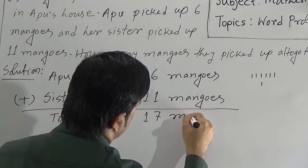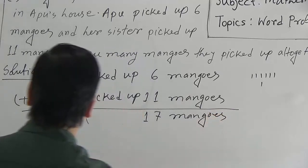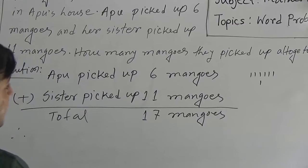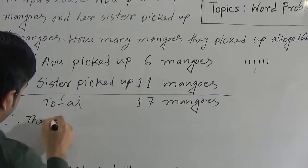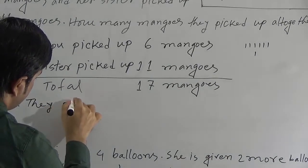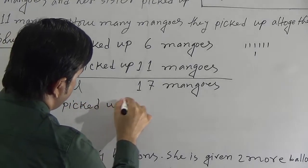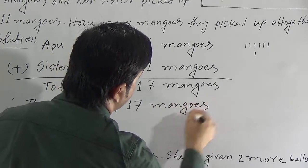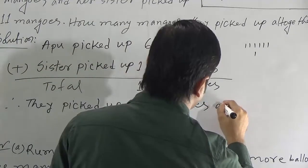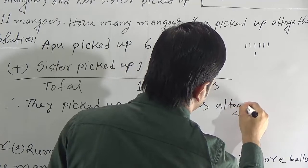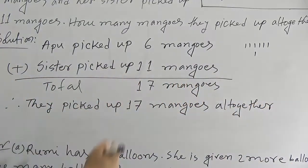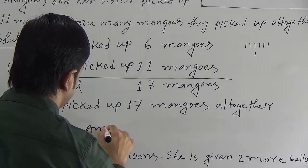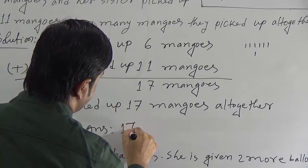The total is 17 mangoes. Therefore, they picked up 17 mangoes altogether. This is our required answer. We can write: answer is 17 mangoes.